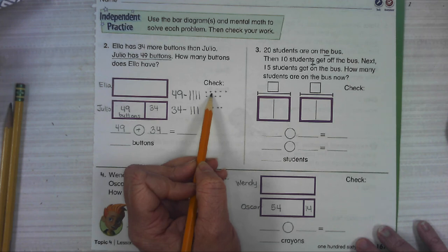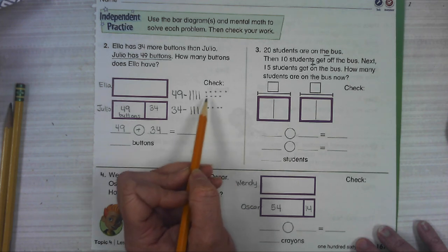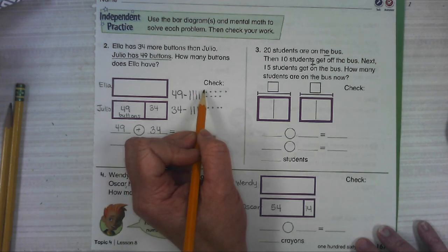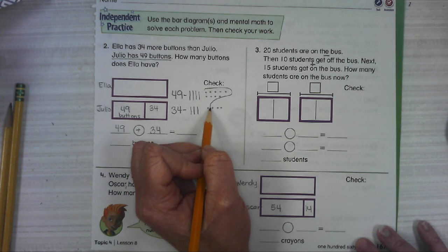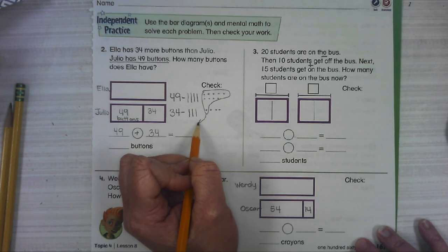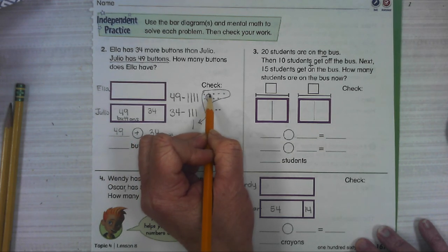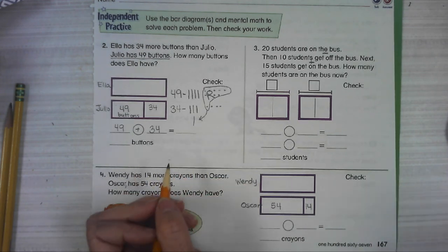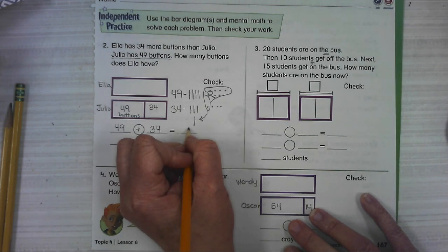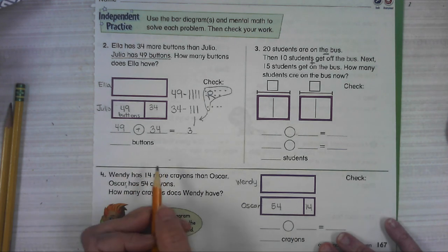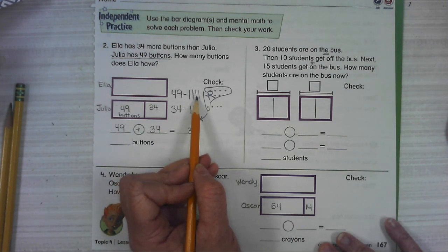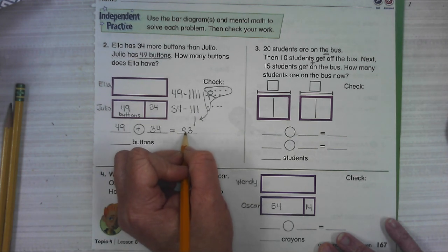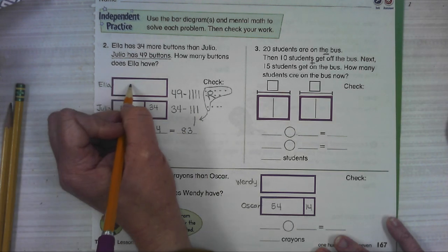1, 2, 3, 4, 5, 6, 7, 8, 9, 10. I'm going to circle a group of 10 and I'm going to move it over here to the tens place and I'm going to put an R over this so I know that I've regrouped those. Then I've got three left in the ones place. Tens, I've got four here. 1, 2, 3, 4, 5, 6, 7, 8. So it seems to me that Ella has 83 buttons.